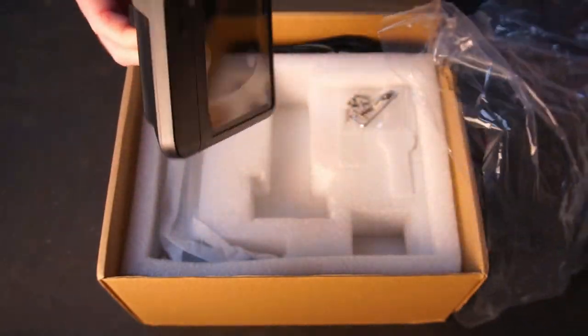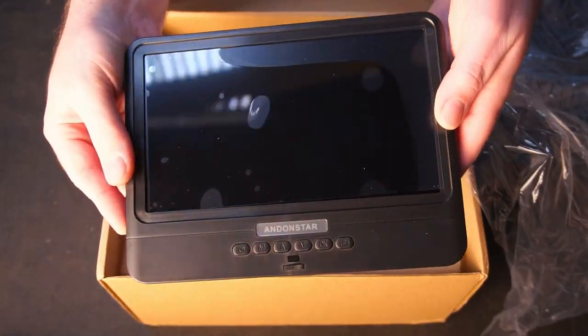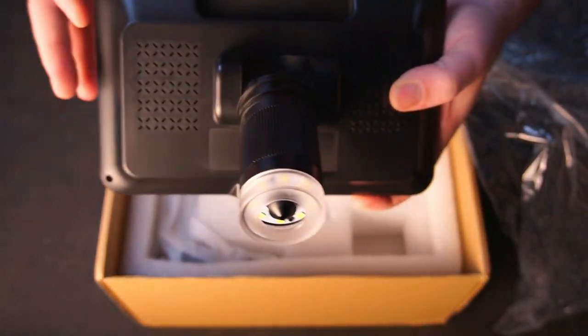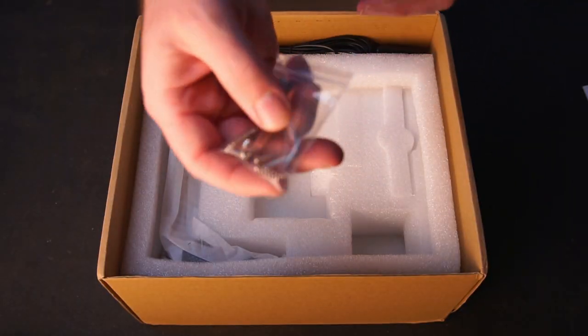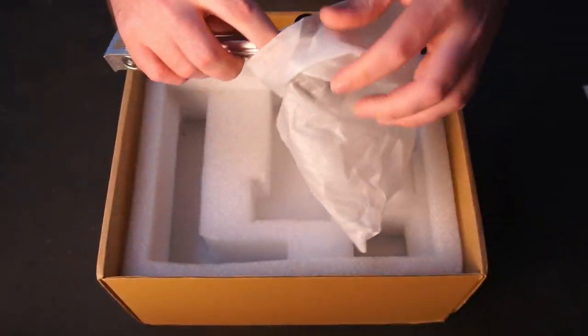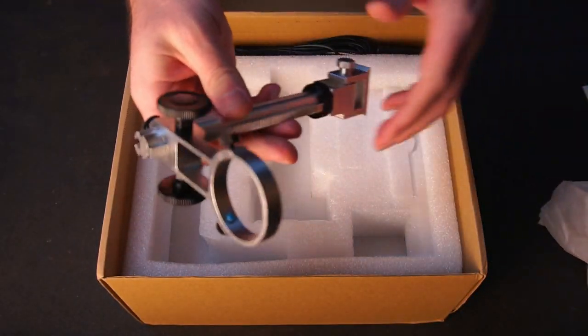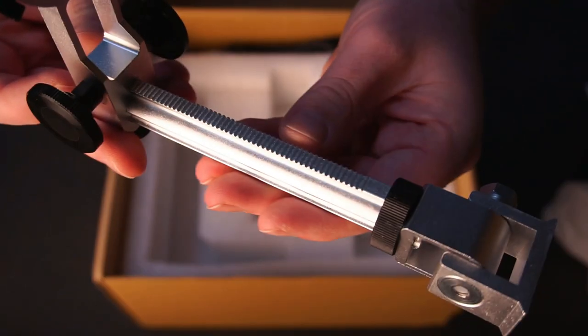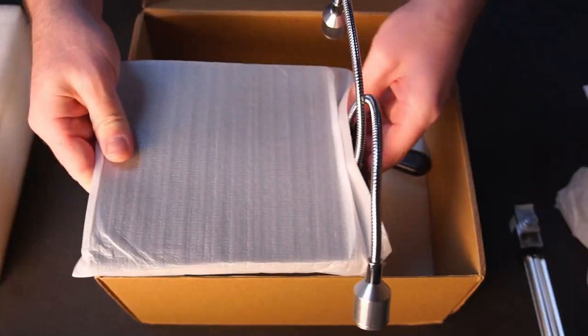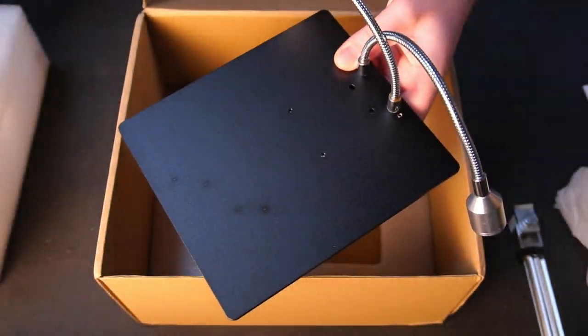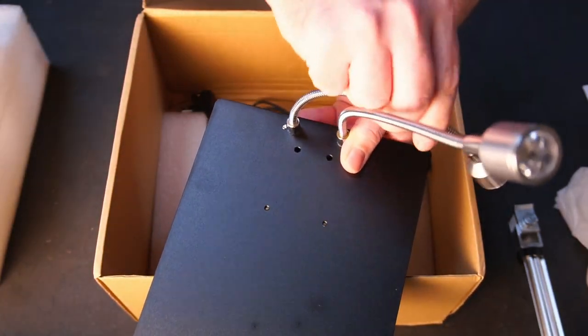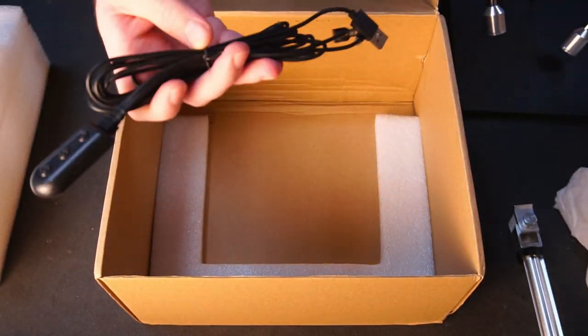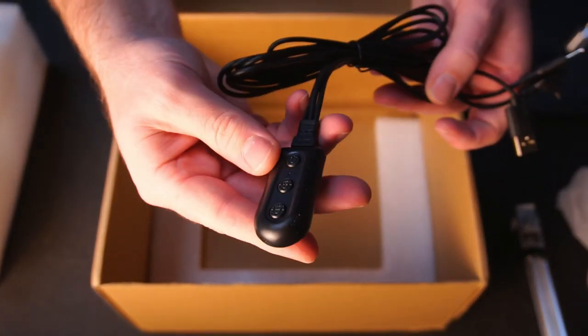In the box you'll find the display and camera unit, a bag of hardware, camera stand, a base plate with flexible LED lights, and a USB cord with an inline remote to control the LED lights.